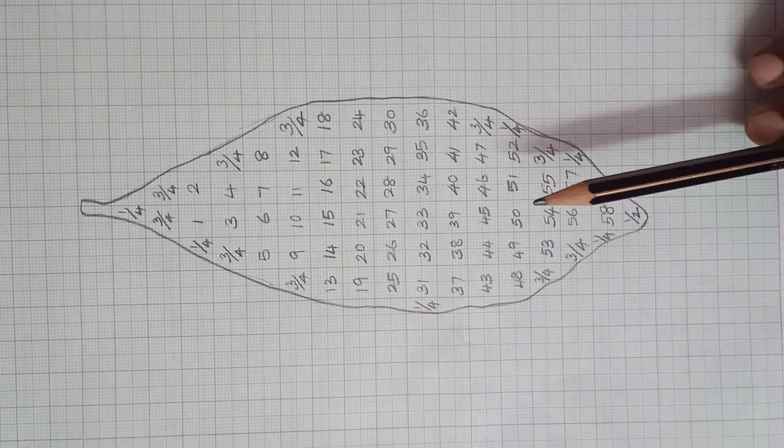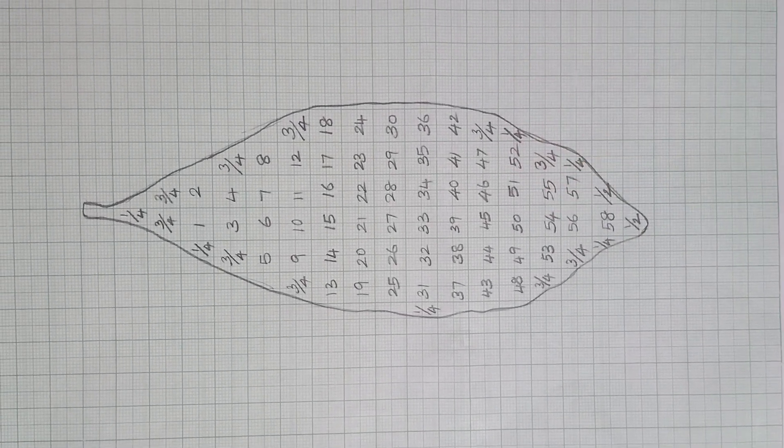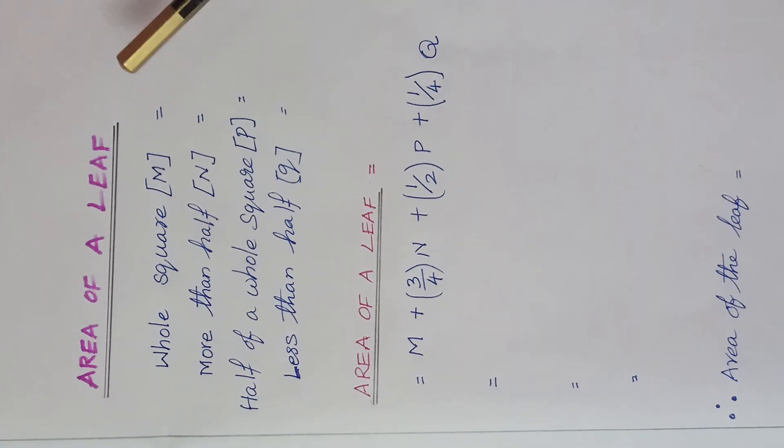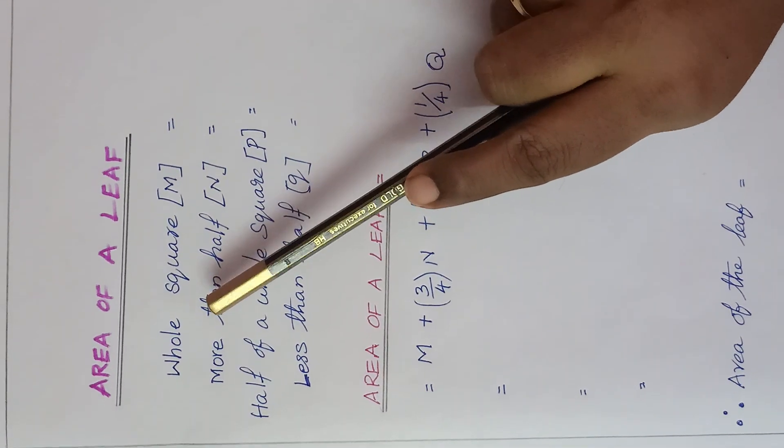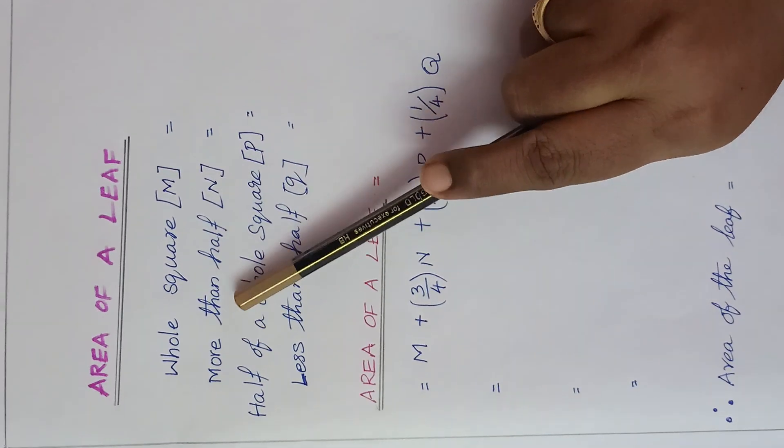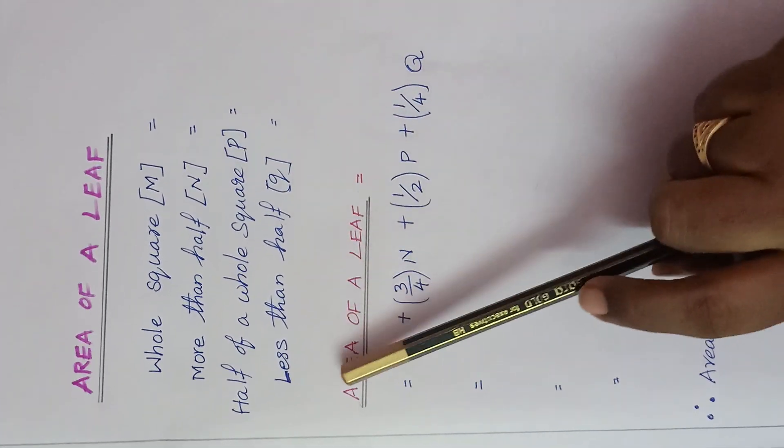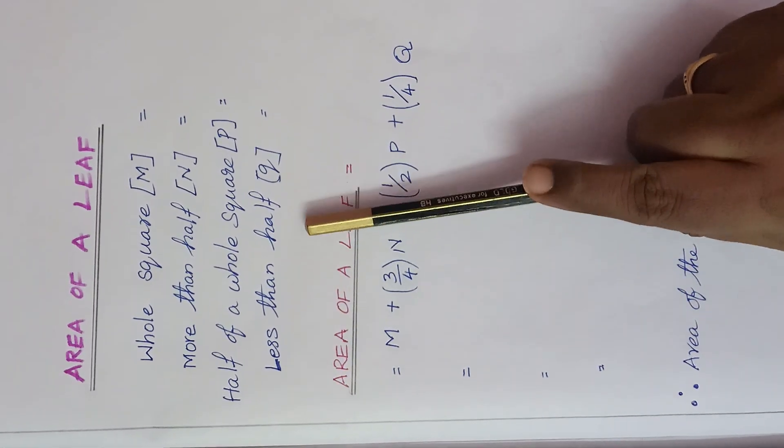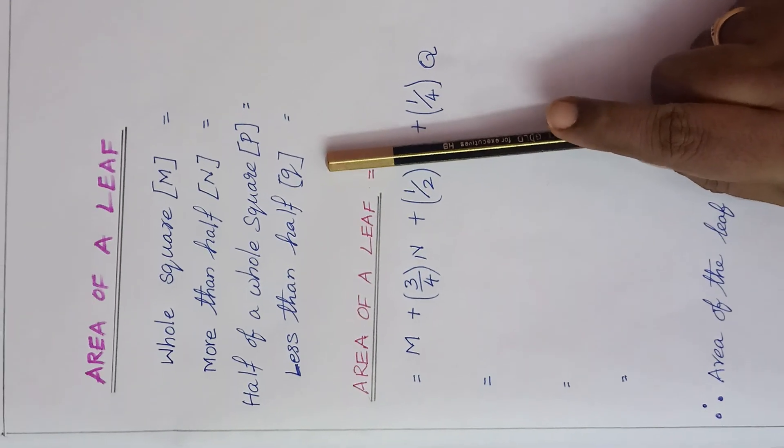we will apply this in a formula. To find out the area of the leaf, we mark whole square as M, more than half as N, half square as P, less than half as Q. Shall we count now?